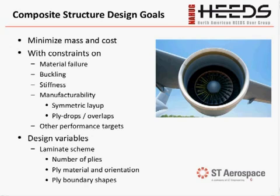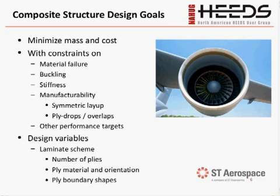What are the design goals when designing a composite part? Similar to structural components that are metal, we want to minimize mass and cost. We have constraints on material failure. With composites, the most popular material failure modes are the Tsai-Wu failure criterion, the Tsai-Hill failure criterion, and a max strain failure criterion, for example.